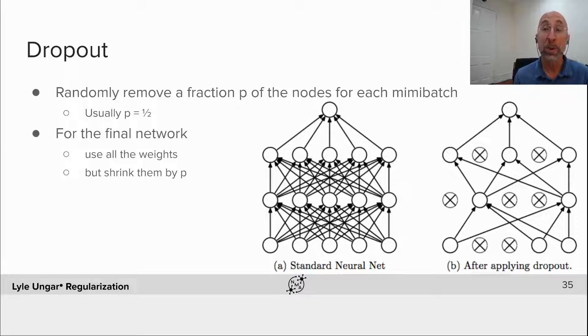Temporarily remove the node and all of the weights coming in and out of it. Now train your resultant half of a neural net with standard stochastic gradient descent for one mini-batch.